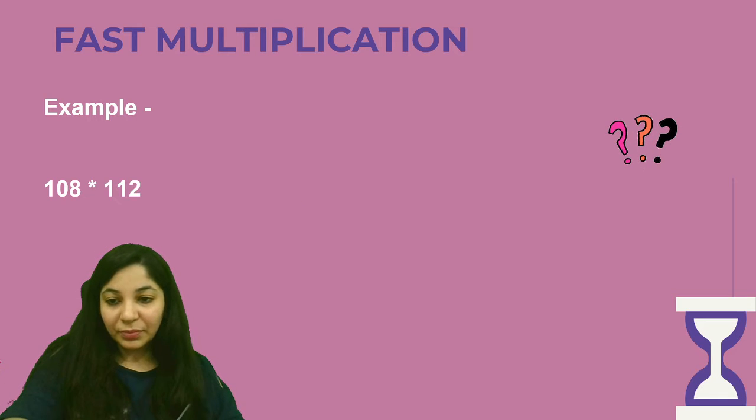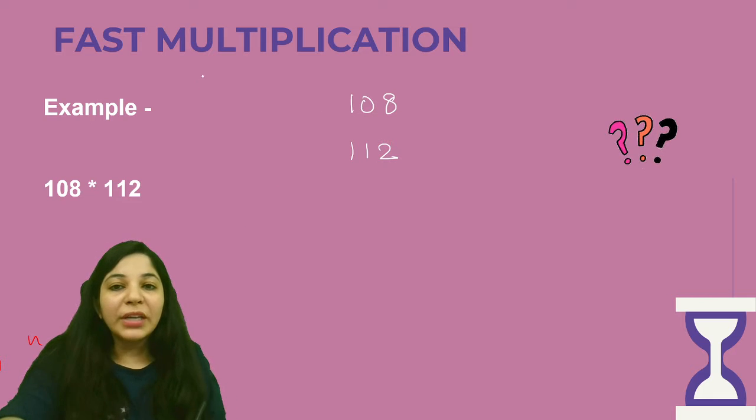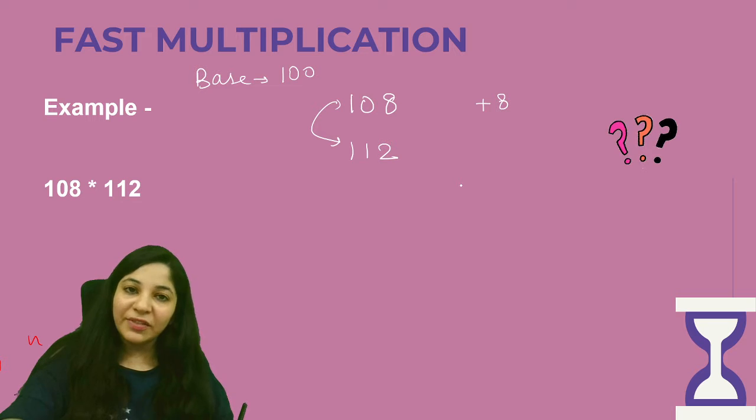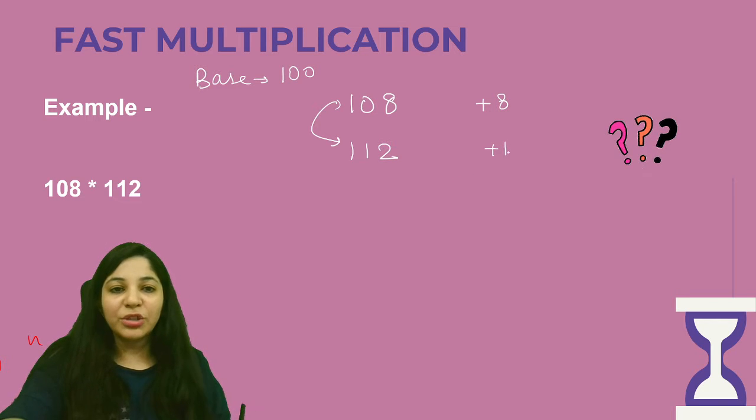Like I told you in the last video, what do you keep steps? 108 is the number, I have to multiply it with 112. So first step is that I will select the base that is close to both the values. So the base is going to be 100. And 108 is 8 more than the base value, and 112 is 12 more than the base value.